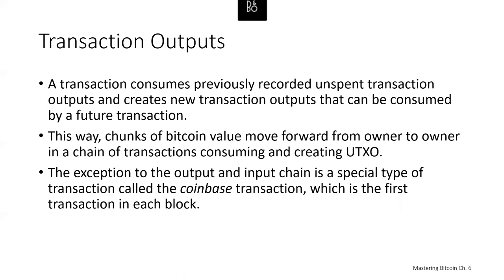You might ask: what comes first, inputs or outputs? Outputs come first because Coinbase transactions, which generate new Bitcoin, have no inputs and create outputs from nothing. Every Bitcoin transaction creates outputs recorded on the Bitcoin ledger. Almost all of these outputs create spendable chunks of Bitcoin called UTXOs, which are recognized by the whole network and available for the owner to spend in a future transaction.